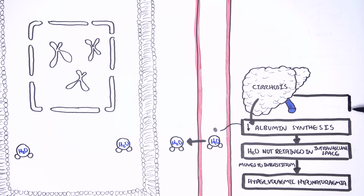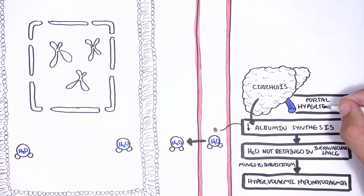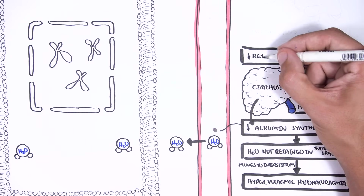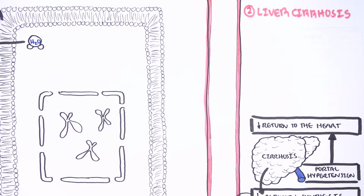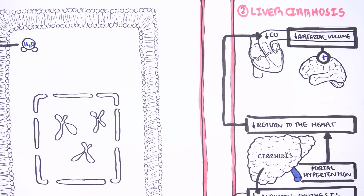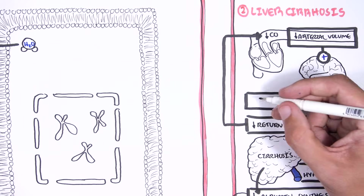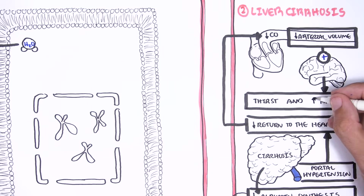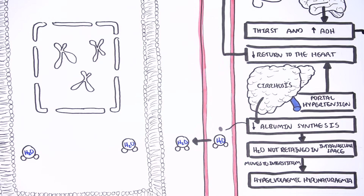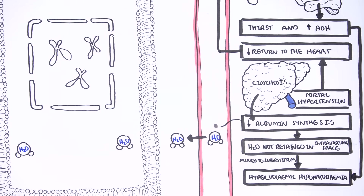On top of this, in liver cirrhosis there is portal hypertension which, together with low albumin, will decrease circulating arterial volume, leading to a reflex whereby the body will have increased thirst and also release of antidiuretic hormone. This will cause hypervolemic hyponatremia.